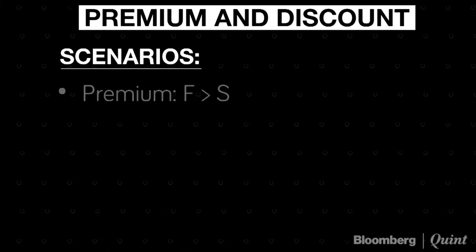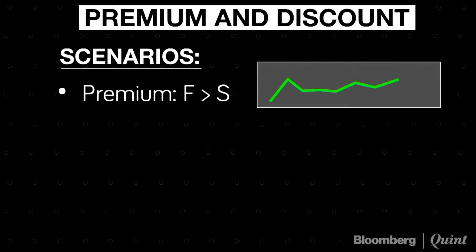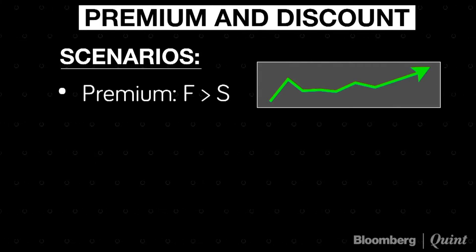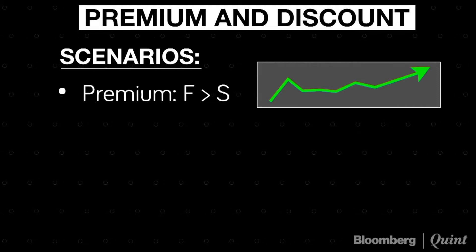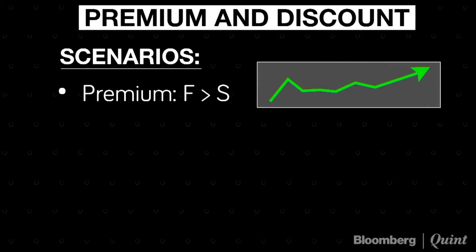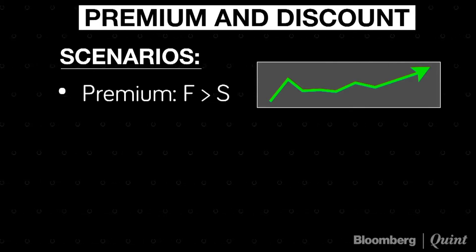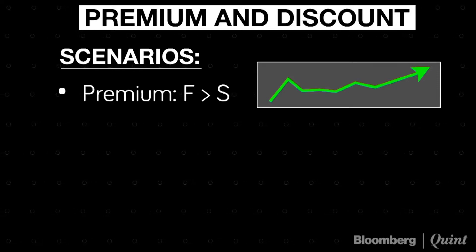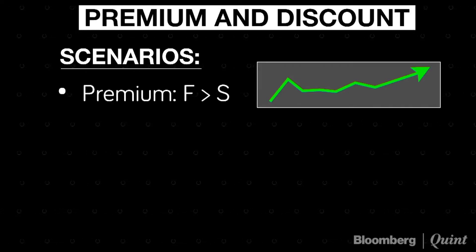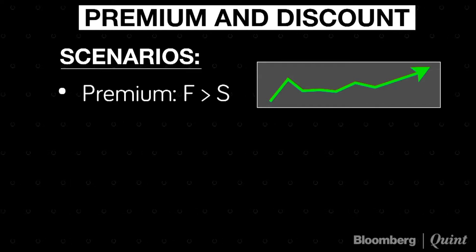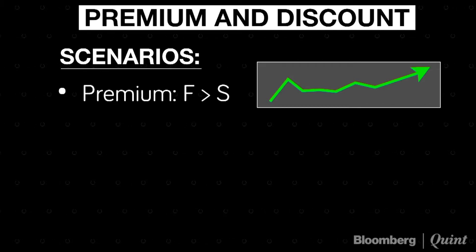What you are suggesting is the future trading at 11,550 and spot trading at 11,500. This means that my future is trading at a premium, which is an ideal case scenario. Most of the time we will always see the price of the curd is always higher than the price of the milk. This is an ideal case scenario where the future is trading at a premium compared to the spot price. Theoretically, this is called the case of contango or premium, where the future is trading at a premium.